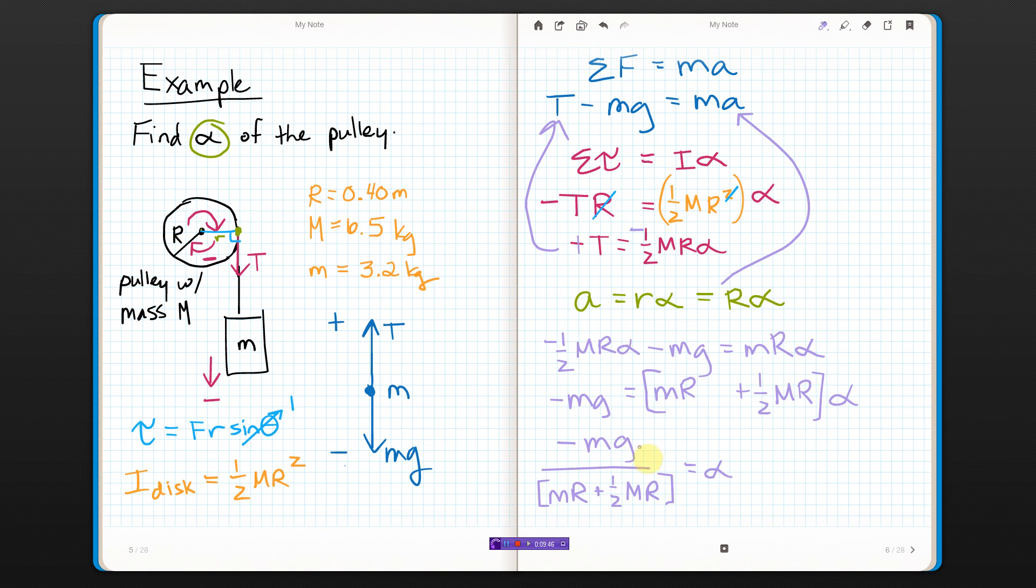Alrighty. If I put numbers in then, let's see what I'll get. I put all those straight into a calculator all at once, and I got negative 12 and change, but I only had two sig figs over here, so I'm going to keep it at two sig figs. Negative 12 radians per second squared.